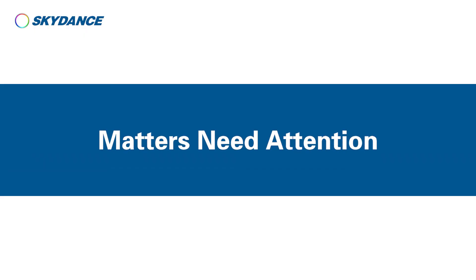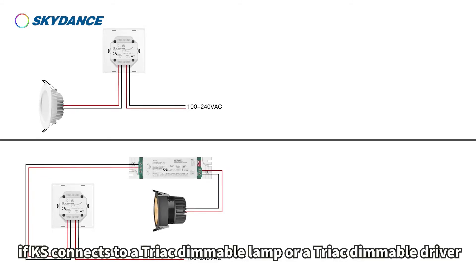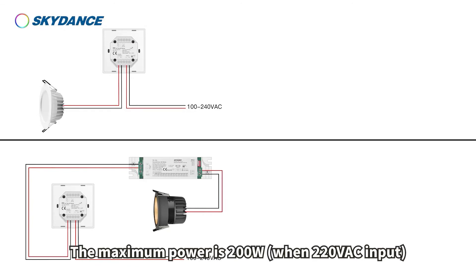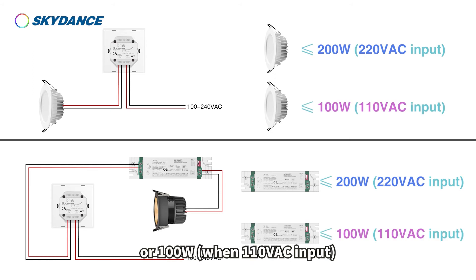Matters needing attention: with regards to Applications 2 and 3, if KS connects to a triad dimmable lamp or a triad dimmable driver, the maximum power is 200 watts when 220 volts input, or 100 watts when 110 volts input.